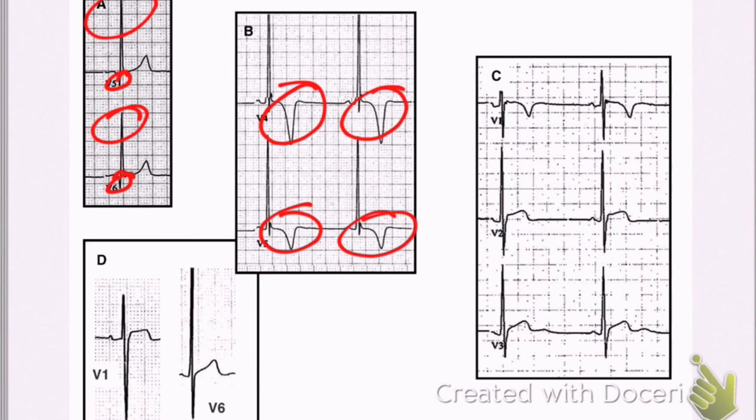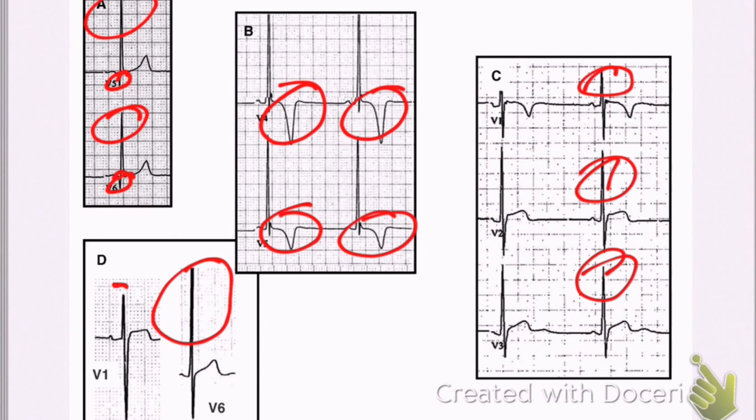Remember that here in B, you can have these repolarization abnormalities of the T waves that can fool you. Here in C, same thing again. You can have these big voltages, big voltages, big voltages in the anterior leads. And in D, huge voltages in V6 and in lead V1 as well.